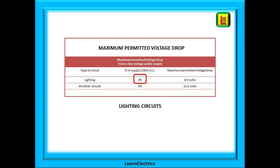What is the maximum voltage drop permissible? We will only consider the public supply — in other words, the national grid. The maximum values are divided into two types. Lighting is the first type: lighting circuits are permitted up to three percent voltage drop between source and point of use, which is 6.9 volts. For all other circuits — including sockets, cookers, showers, water heaters and everything else that is not lighting — the maximum permitted is five percent, which is equivalent to a volts drop of 11.5 volts.